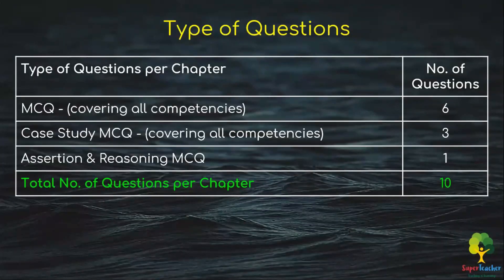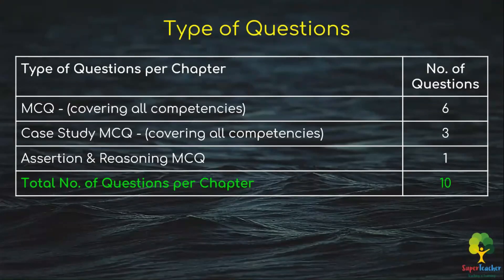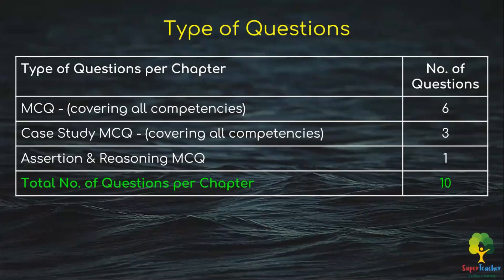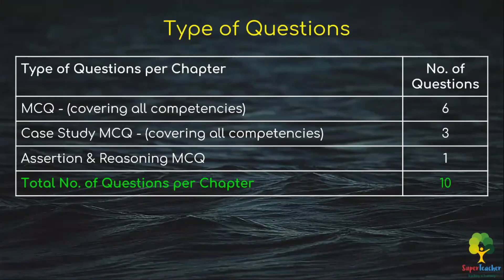There will be 10 questions from each chapter. In terms of question types: there will be 6 MCQs covering all three competencies; there will be 3 case-based MCQ questions, where a case study is given and multiple choice questions are based on it, covering all three competencies; and there will be 1 Assertion and Reasoning MCQ. This gives a total of 10 questions per chapter, and this structure applies to both Math and Science chapters — Real Numbers, Polynomials, Chemical Reactions and Equations, and Acids, Bases and Salts.